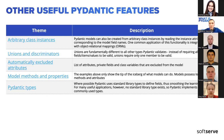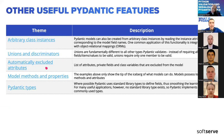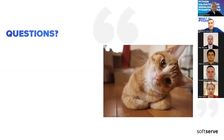The Pydantic world is really huge and we've just scratched the tip of the iceberg. Further topics to explore: arbitrary class instances for ORM models, unions and discriminators, automatically excluded attributes, private fields, class and model methods, model properties, and Pydantic custom types — for example, a custom 'BearerToken' type. That's pretty much it from my presentation — any questions?